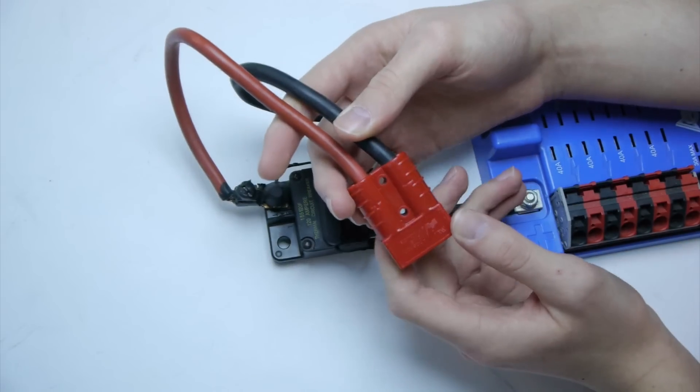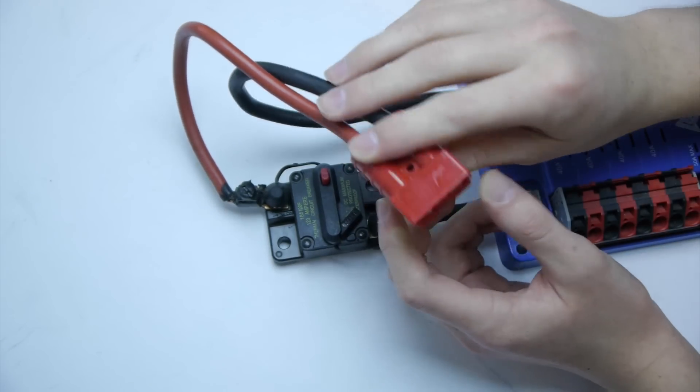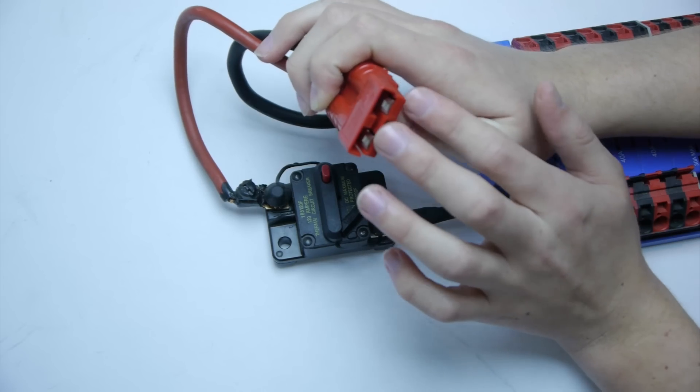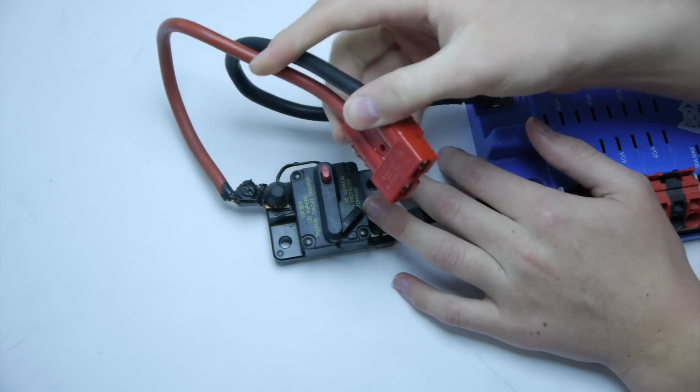This here is an Anderson connector. This is what you use to connect directly into your battery. It has two thick leads here and connects really securely into your battery.